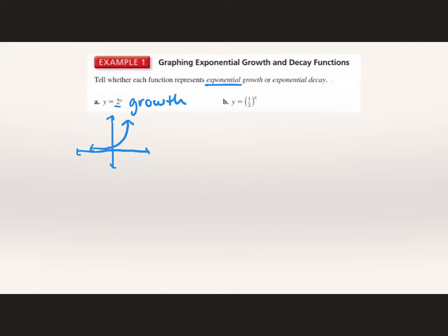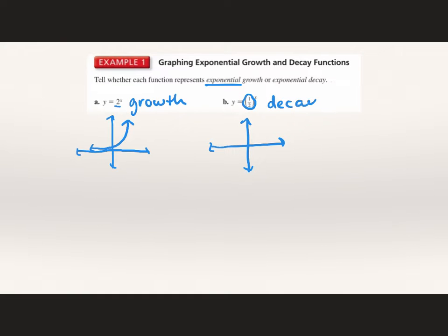For part b, we have y is equal to one-half to the power of x. Since this is a fraction, it's in between 0 and 1. This gives us exponential decay, and our graph would be decreasing as x values get bigger — so it would look like that.